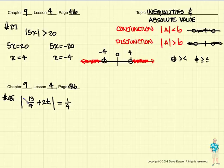Chapter 9, Lesson 4, number 45 says the absolute value of 13 fourths plus 2t is equal to 1 fourth. Let me check. 45 says go ahead and solve this. So we're going to end up with two equations. This is an equality, not an inequality. So this is like we did in the past. We'll end up with two equations.